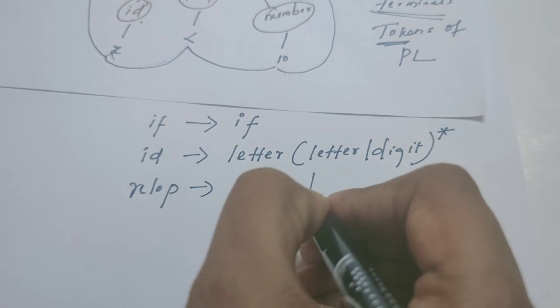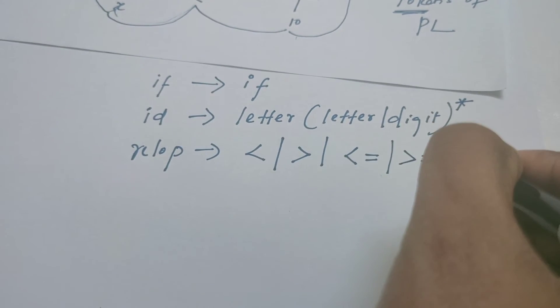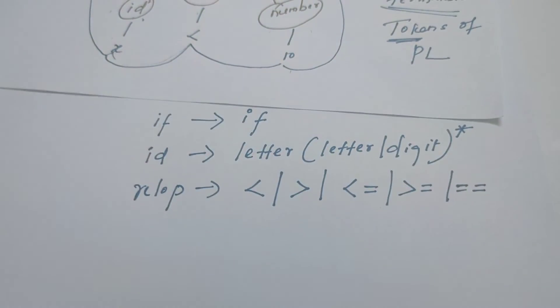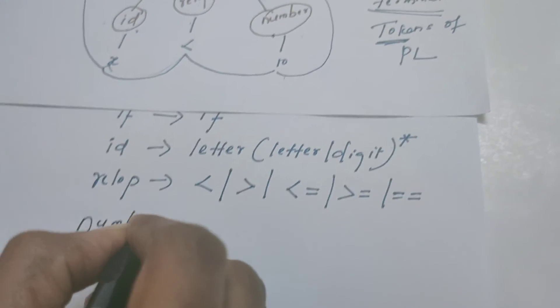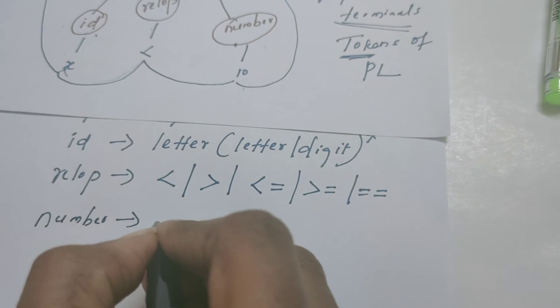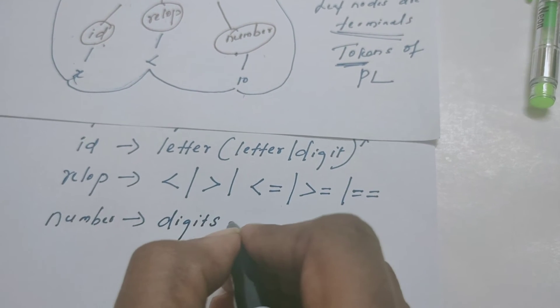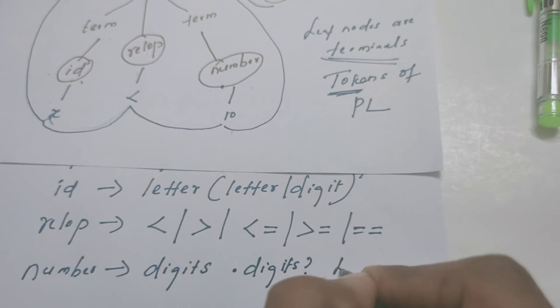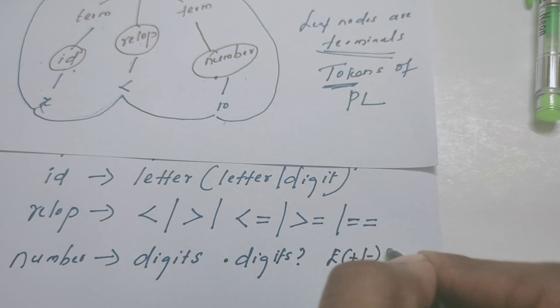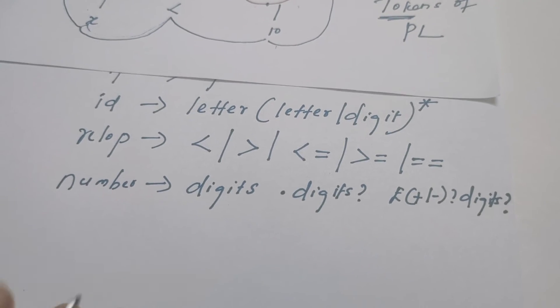Greater than is a relational operator, less than or equal to, greater than or equal to, and equal to are all relational operators. Then number is a leaf node — it is a token. Number can be defined as a single digit or many digits, followed by an optional fraction part, followed by an optional exponent part. This definition was already seen in the previous video.